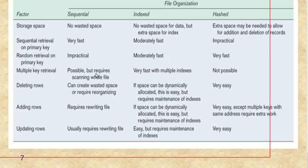For multiple key retrieval, it is possible in sequential but requires scanning the whole file. In indexed file organization it is very fast with multiple indexes. In hash file organization, retrieving multiple keys is not possible at all.